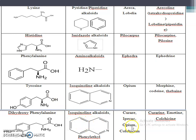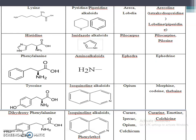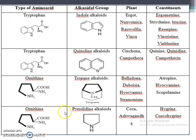Another group of isoquinoline alkaloids - including curare, ipecac, opium, and colchicum - is obtained from dihydroxyphenylalanine (DOPA). The difference is that tyrosine has one hydroxyl group, while dihydroxyphenylalanine has two hydroxyl groups attached. Pseudo alkaloids are not synthesized from amino acids at all.